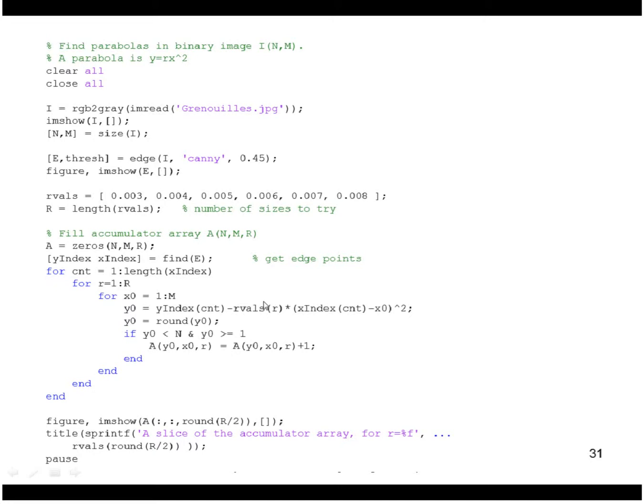So this is the code that does that. We're going to read in an image, do Canny edge detection. Here's our values of a. I call them r here. Looks like I have six of them that I want to try. Here I loop over the, well, this is a little different way of finding it. I use the find function to get all the edge points in the image and put the coordinates into y index and x index. So I have a loop over that instead of over the whole image. But then I loop over the values of r, loop over values of x, calculate values of y, find the correct, well, I just round y0 off, and that will be the index into A, and I increment A.